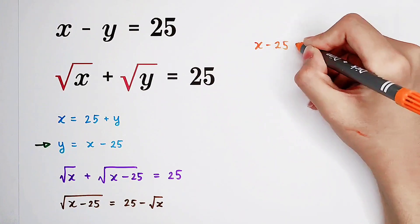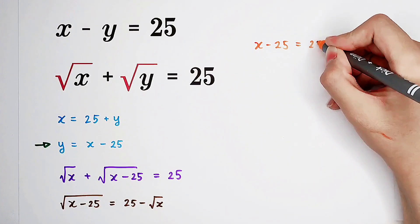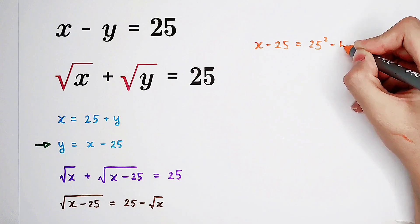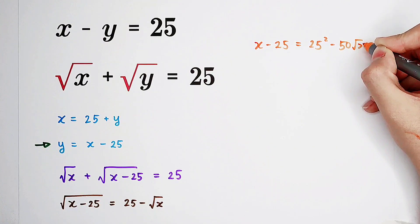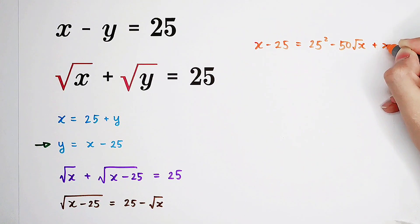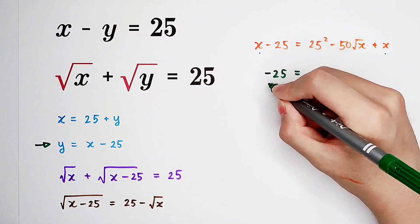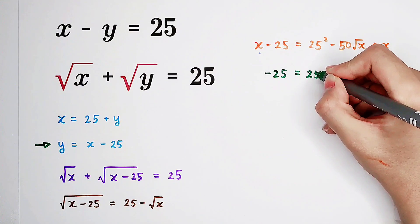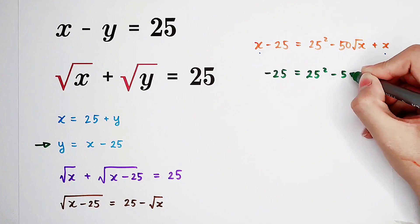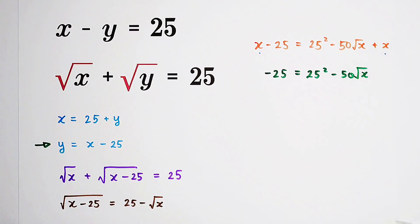x minus 25 equals 25 squared minus 50 times square root of x, then plus x. Now you can see, x appears on both sides, so cancel. So now, negative 25 equals 25 squared minus 50 times square root of x.